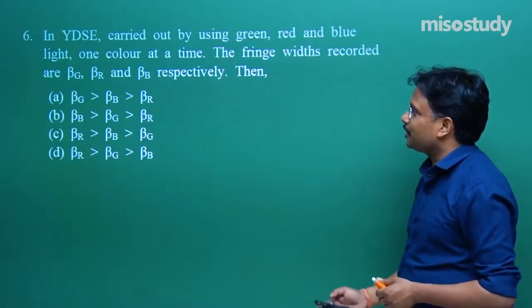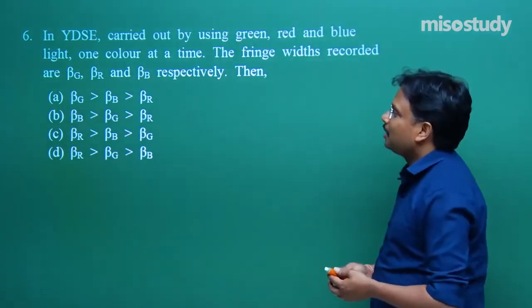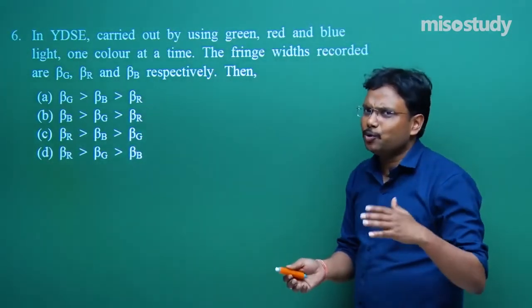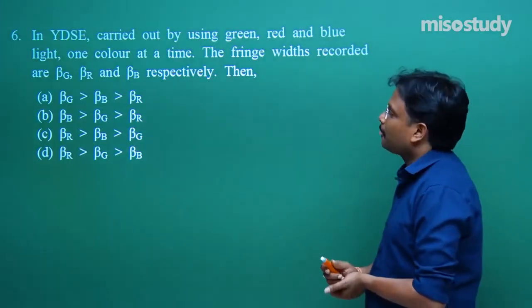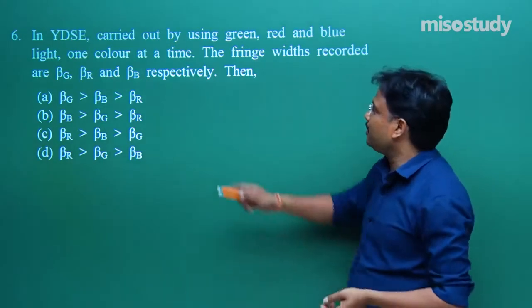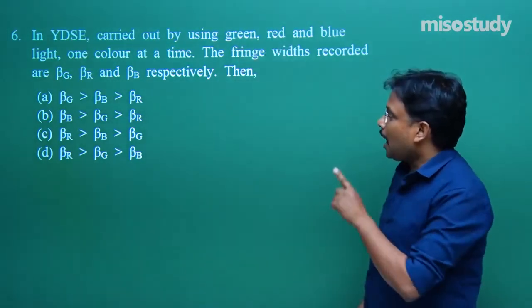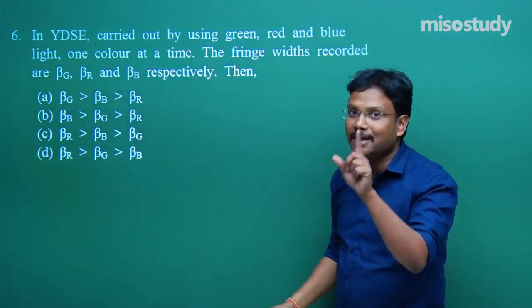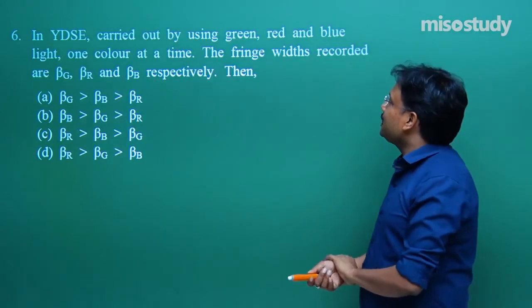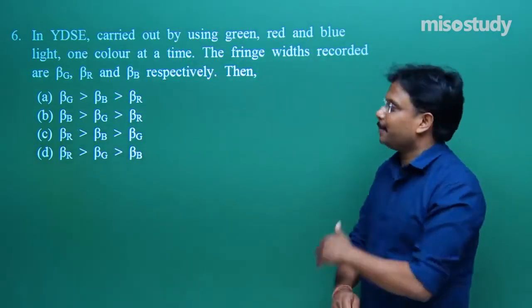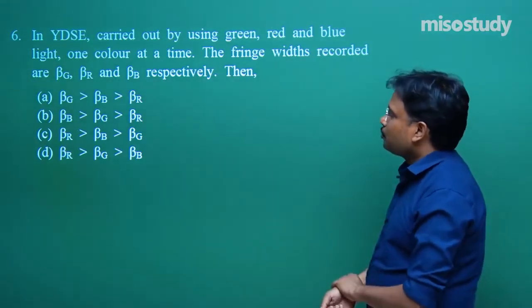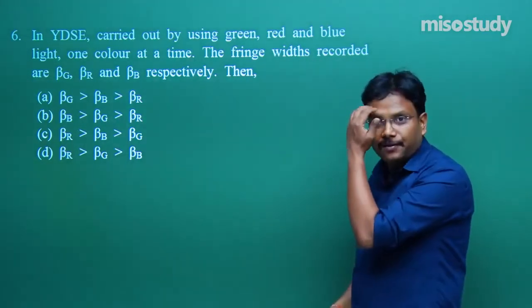Here comes your first question. As you know, Young's double slit experiment is one of the very important fundamental experiments in wave optics. In YDSE carried out using three different colors — one at a time — green, red, and blue, the fringe widths recorded are β_g, β_r, and β_b. What is the relation between the fringe widths when the wavelength is changed?